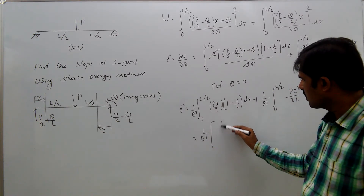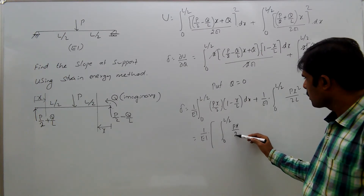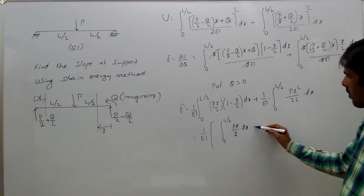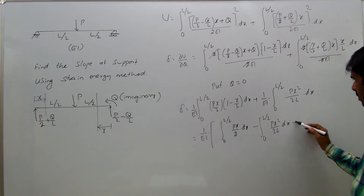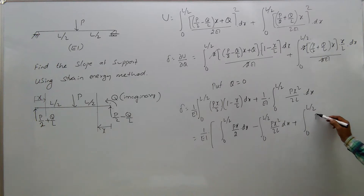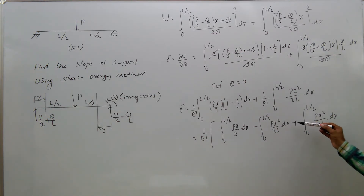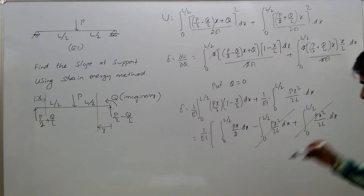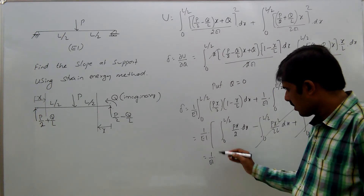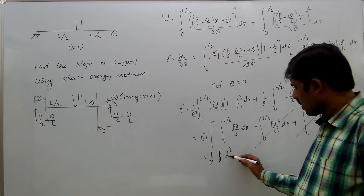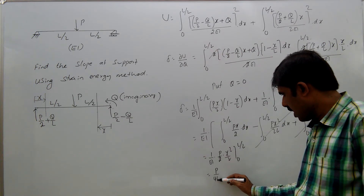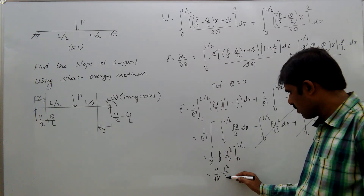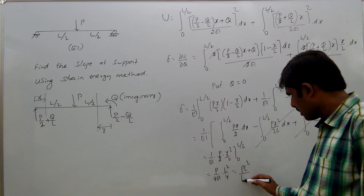1/EI times: integral from 0 to L/2 of Px/2 dx, minus integral from 0 to L/2 of Px squared by 2L dx, plus integral from 0 to L/2 of Px squared by 2L dx. The second and third terms are the same with opposite signs, so they get cancelled. That leaves 1/EI times P/2, and integrating x gives x squared by 2 from 0 to L/2. That equals P/4EI, and x squared gives L squared by 4, so the result is PL squared by 16EI.